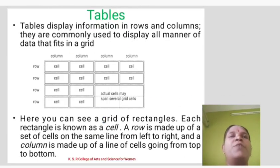Tables display information in rows and columns. They are commonly used to display all manner of data that fits in a grid. For example, four rows, four columns. Here you can see a grid of rectangles. Each rectangle is known as a cell. A row is made up of a set of cells on the same line from left to right, and a column is made up of a line of cells going from top to bottom.